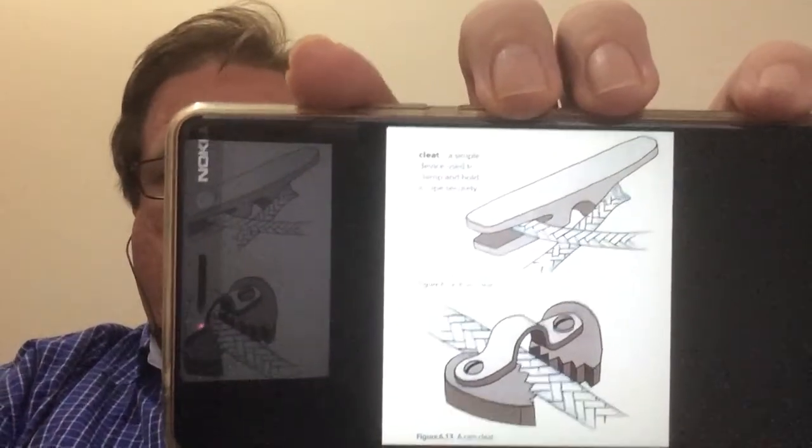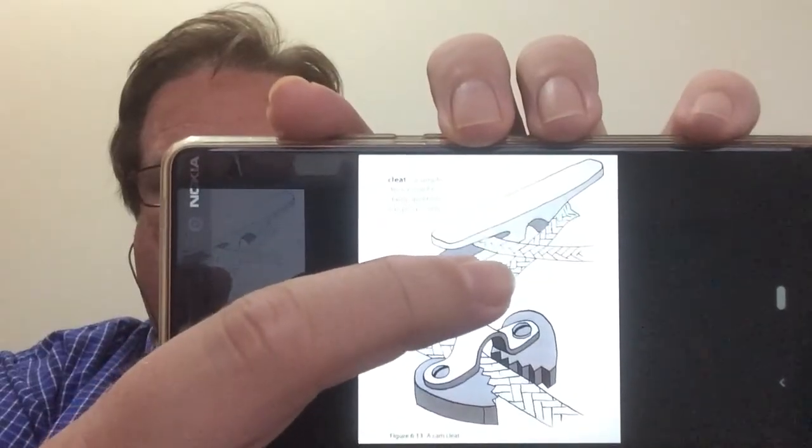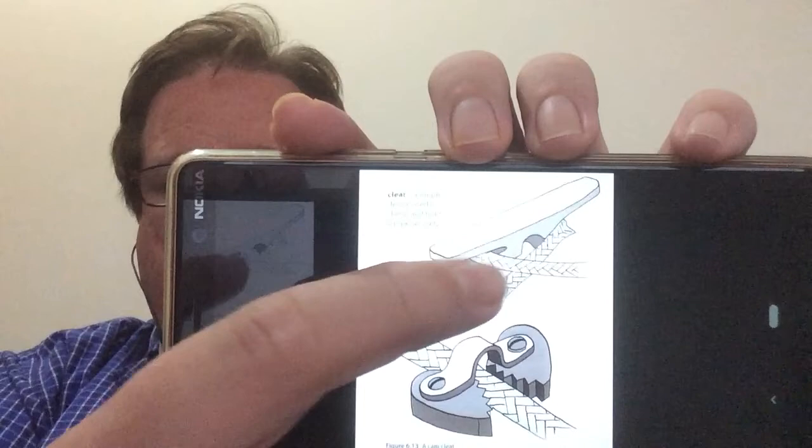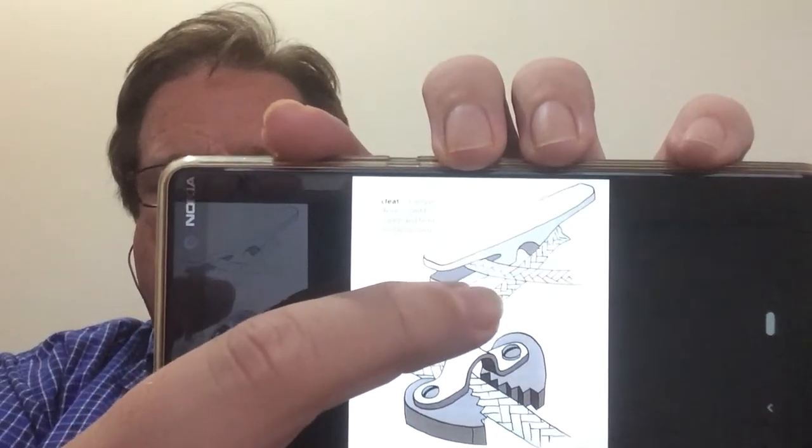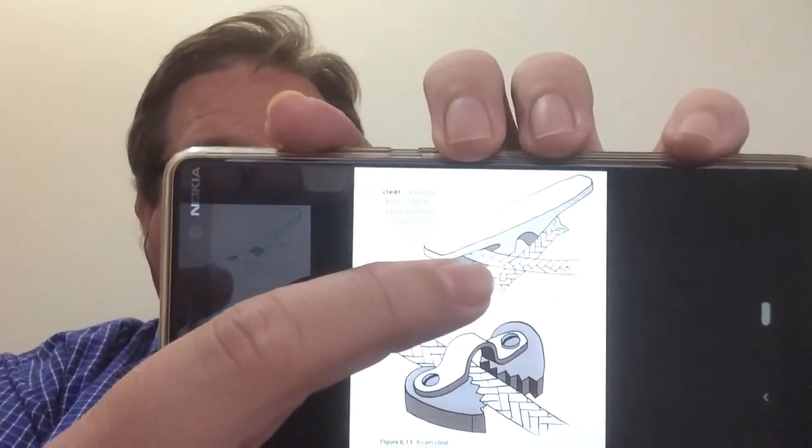That first one is called a jam cleat. It basically is designed that the rope will get trapped inside the very thin little areas there. And then you can use it to tie up a boat or moor it or tie up a sail or something like that.